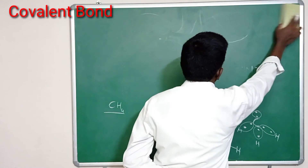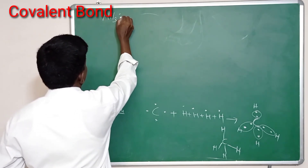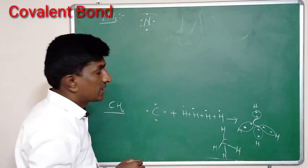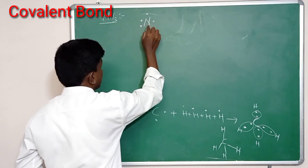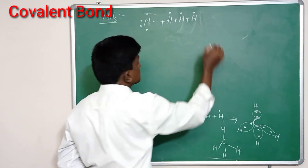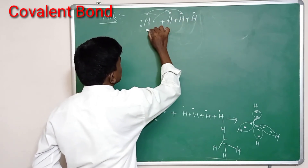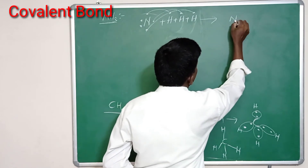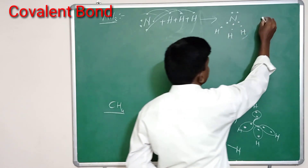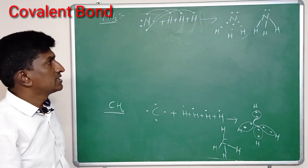Similarly, let us discuss the formation of ammonia. The formula of ammonia is NH₃. Nitrogen has five electrons in its outermost orbit, with three lone electrons. Three hydrogens each have a single electron in their first orbit. Nitrogen contributes three electrons and forms three covalent bonds with three hydrogens — the first pair of electrons with the first hydrogen, the second pair with the second hydrogen, and so on. In this way, nitrogen forms three covalent bonds with three different hydrogens, forming ammonia.